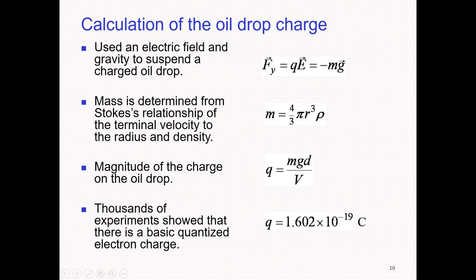Thousands of experiments showed a basic quantized electron charge. The value is 1.602 × 10⁻¹⁹ coulombs. This experiment was repeated thousands of times and consistently yielded this value, which is taken as the charge of the electron. The Millikan experiment was thus used to find the charge on the electron.